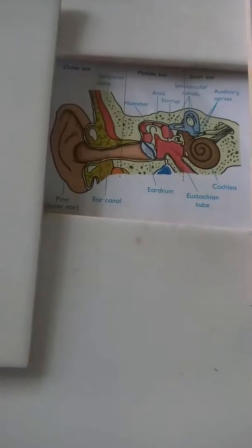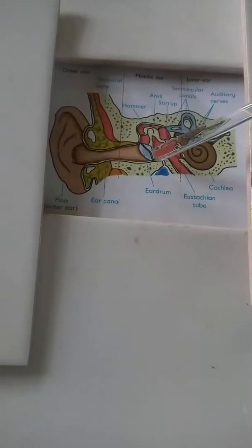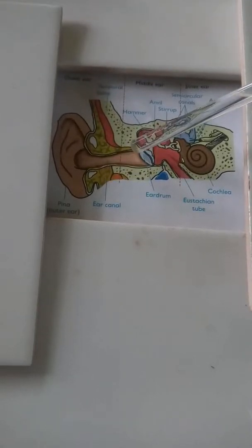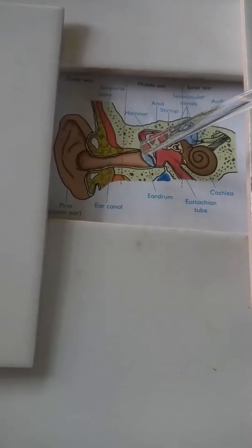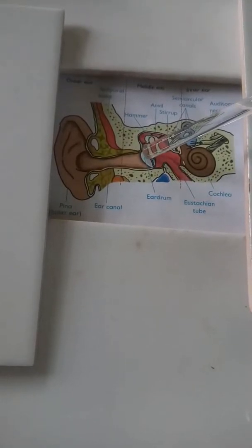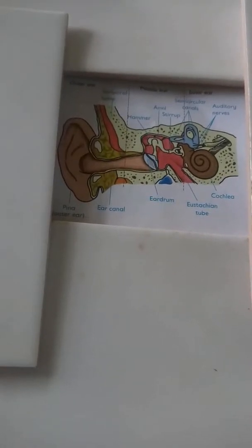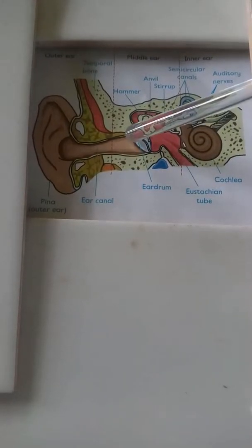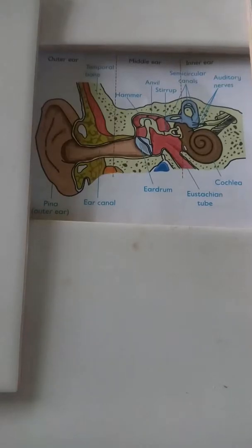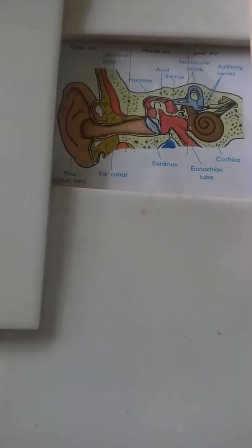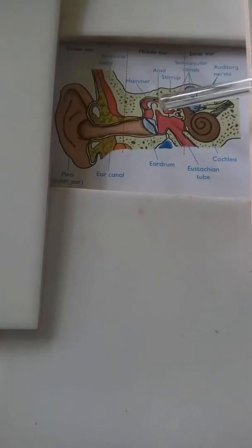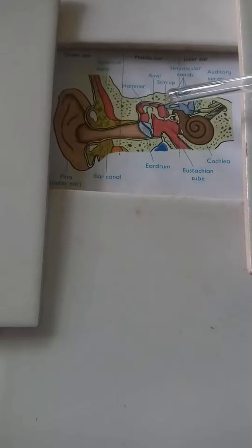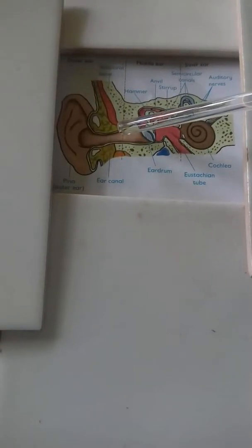A compression of the incoming sound wave forces the eardrum inward, and rarefaction forces the eardrum outward. The eardrum vibrates at the same frequency as the incoming sound wave. The movements of the eardrum set the hammer, anvil, and stirrup into motion, which amplifies the vibrations of the incoming sound wave.